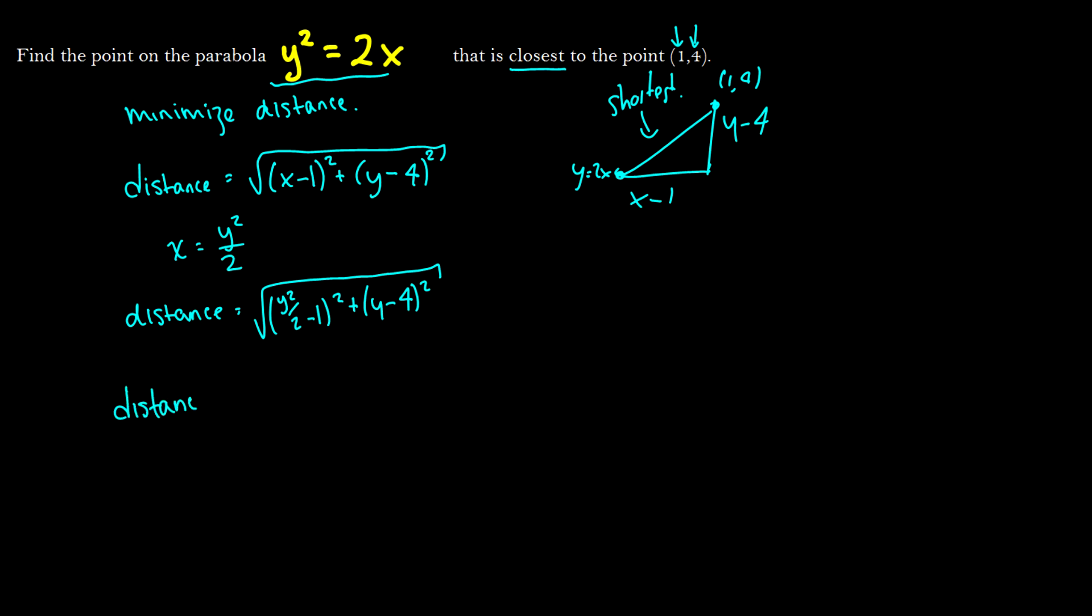We now need to minimize the distance, so we need to take its derivative, and I will speed through this really quick. We'll end up with y cubed minus 8 over the square root of y to the fourth minus 32y plus 68. Honestly, if you're doing a homework problem, I would just plug this into Wolfram Alpha, find the derivative, and then go from there.